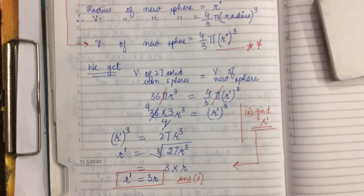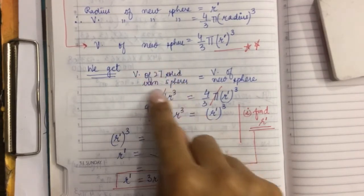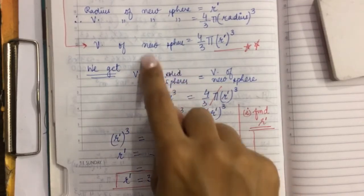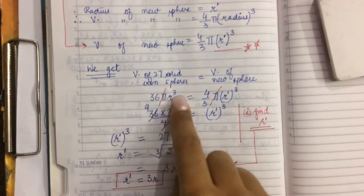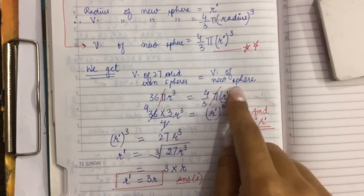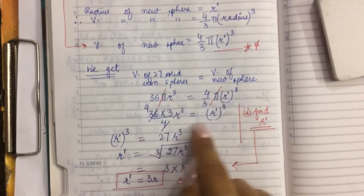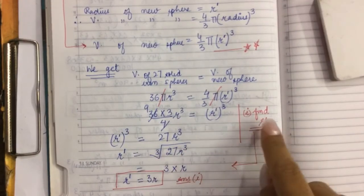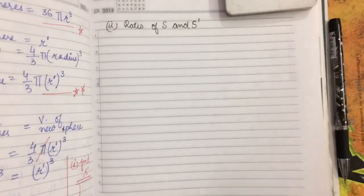To summarize the concept: the solids melted together have their volumes combined, and that combined volume equals the volume of the new sphere. Using this relation we formed the equation, simplified the volumes of the 27 spheres and the new sphere, and found R' = 3r.